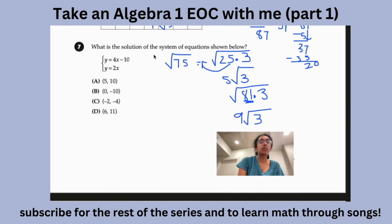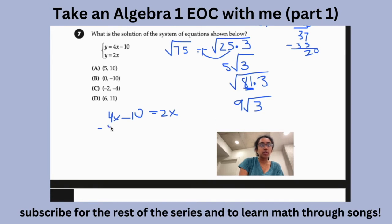So for number 7, what is the solution of the systems of equations shown below? So we have y equals 4x minus 10 and y equals 2x. So what's the easiest way that we could do this? Since we have y and y, let's solve using substitution. So then we have 4x minus 10 equals 2x. So this literally becomes a normal equation that you would solve. So you would subtract 4x to isolate the variable because we're doing order of operations in reverse. So we have -10 equals -2x.